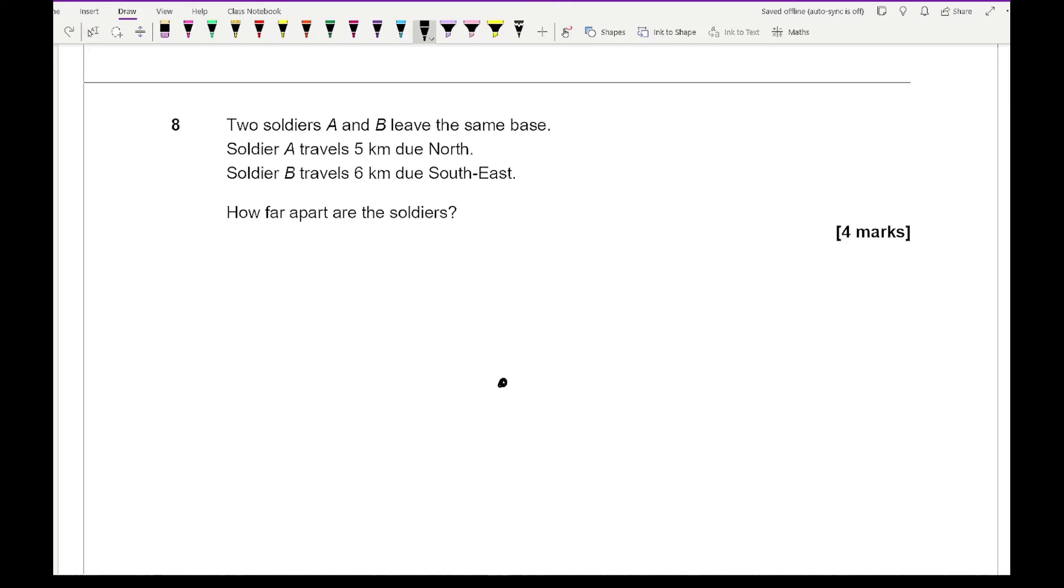So if I imagine a point being my base. Now for soldier A they're travelling north. So I just draw a line. Now I don't need to worry about drawing this to scale. And this is where soldier A is and they are 5 kilometres north. Now in terms of south east. Well that's east. South east is going to be in between. So if I just label that 6 kilometres.